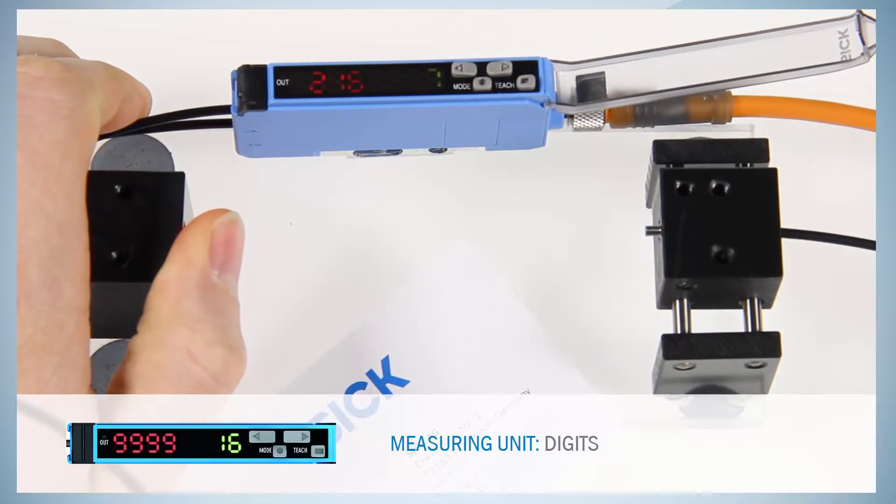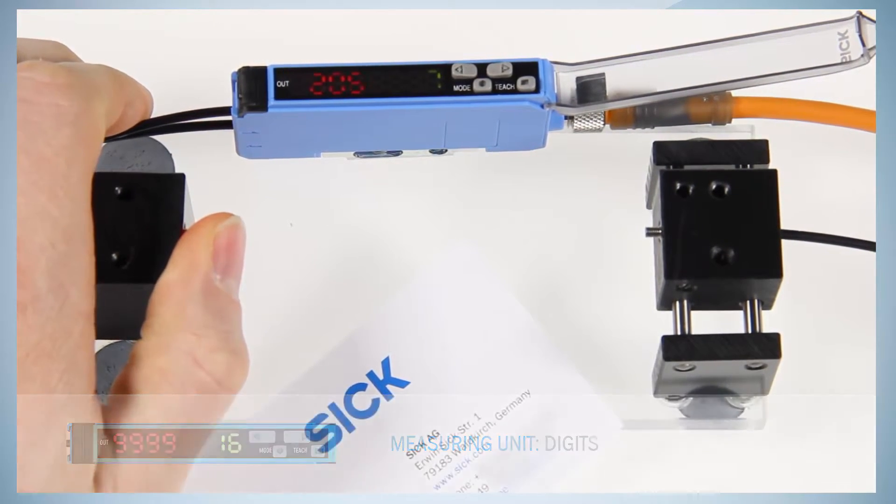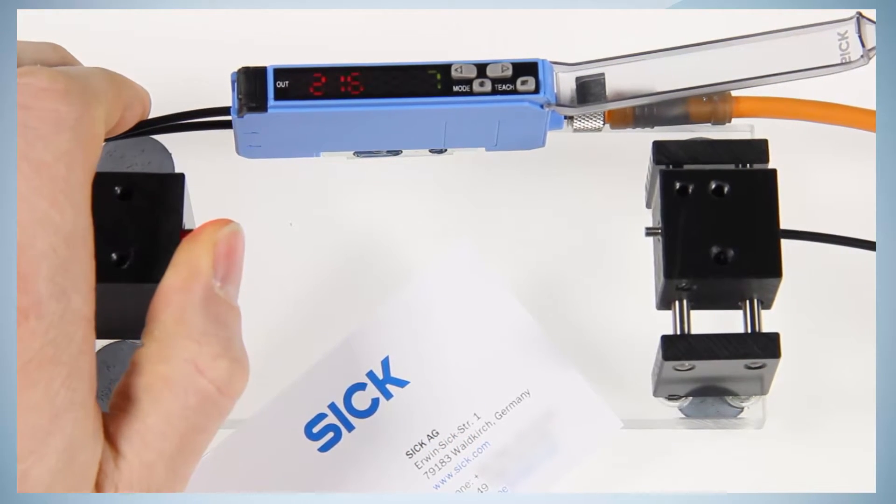Place the finger in front of the end tip of the sender fiber. The finger represents a high degree of contamination in the detection area.